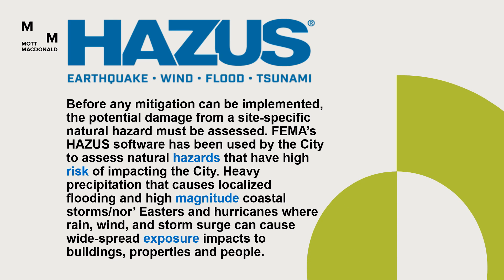Before any mitigation can be implemented, the potential damage from a site-specific natural hazard must be assessed. FEMA's hazard software has been used by the city to assess natural hazards that have high risk of impacting the city. These include heavy precipitation that causes localized flooding and high-magnitude coastal storms, nor'easters, and hurricanes where rain, wind, and storm surge can cause widespread exposure impacts to buildings, properties, and people.